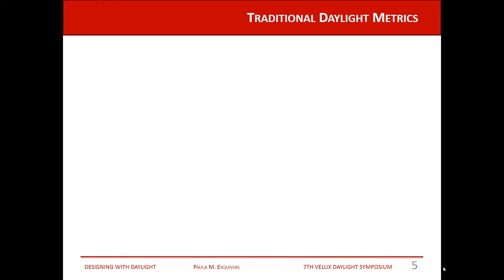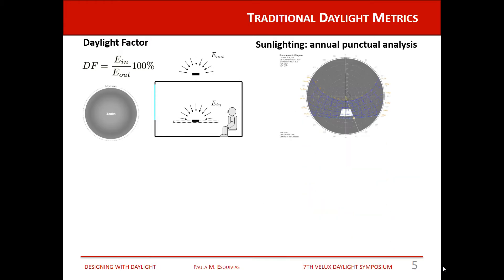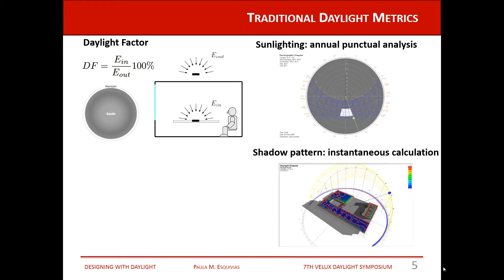In daylighting, we have several metrics that consider the sun and the sky. For example, the daylight factor considers only the sky without the sun. Sunlighting considers the sun without the sky, but without the intensity of the radiation. Both provide only point performance — one for the whole work plane and the other for just one sensor point. If we want to see the performance of the sun across the whole work plane, we move to the shadow pattern.